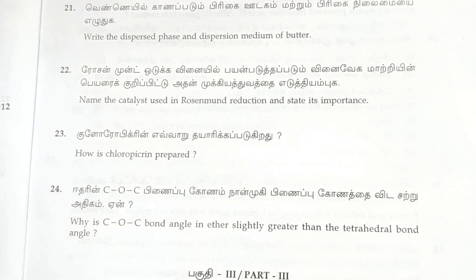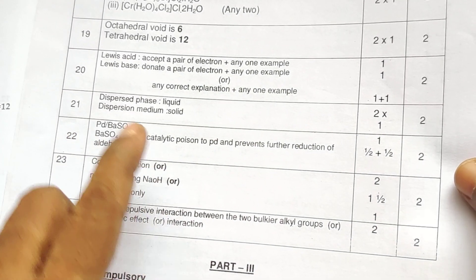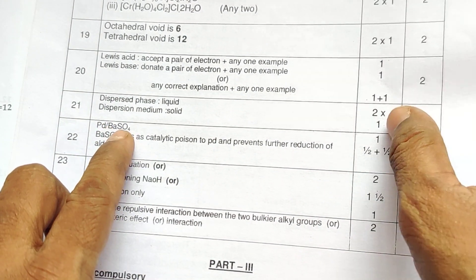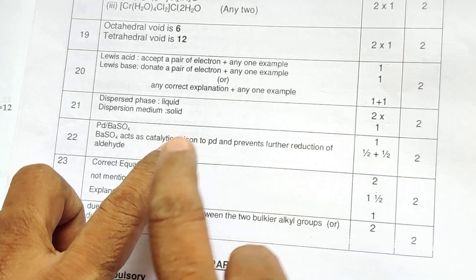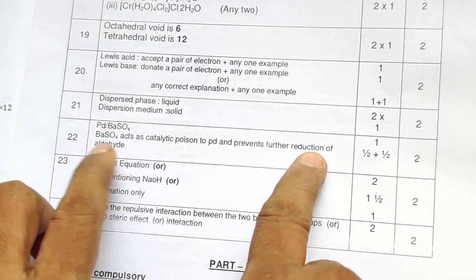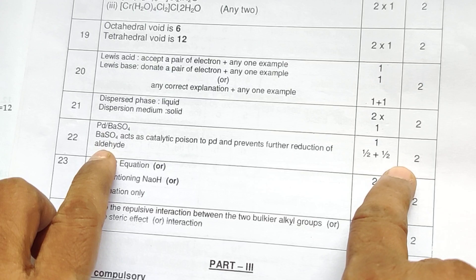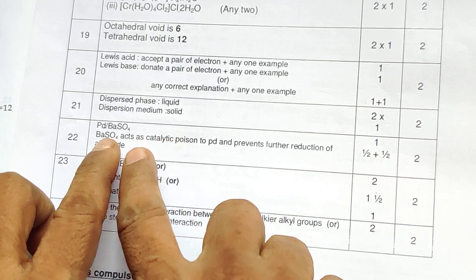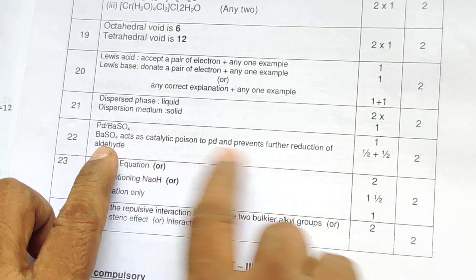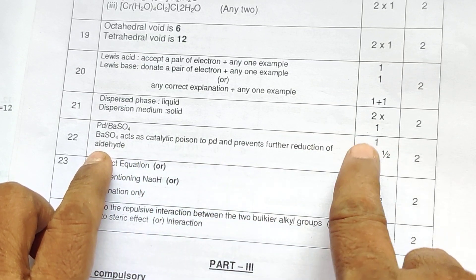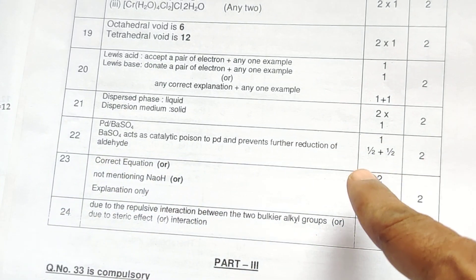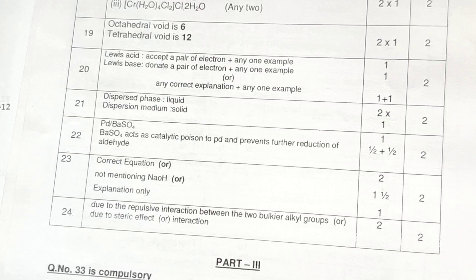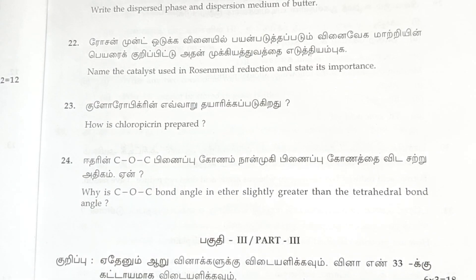Rosenmund reduction is the most important thing here. The catalyst pair is Pd/BaSO₄ — that is very important as it acts as a catalytic poison to prevent further reduction to aldehyde. That is half mark plus half mark, so two marks. If you omit the catalyst, your mark will be cut. This is question number 23.